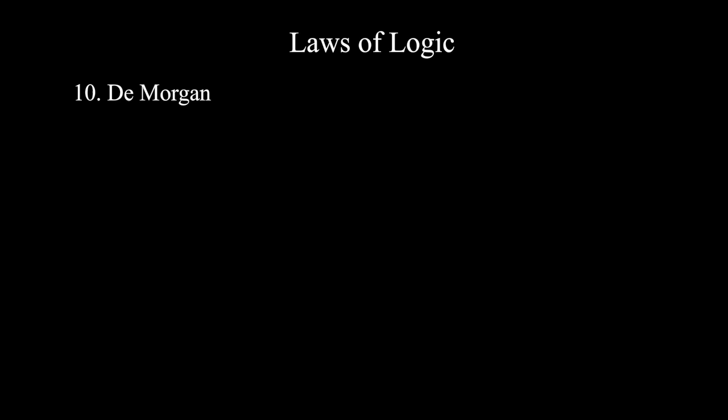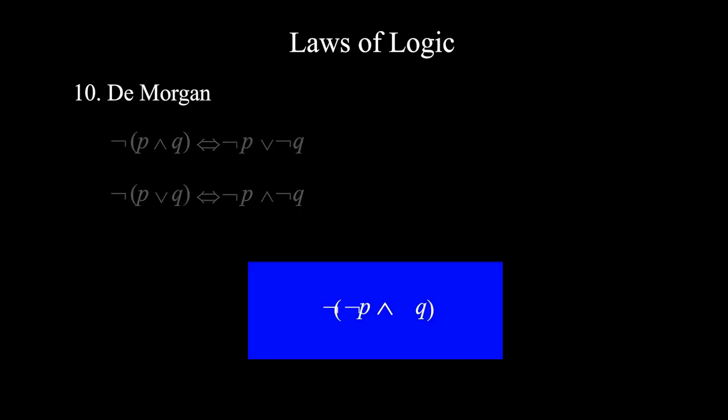Number ten, De Morgan. Not (p and q) is equivalent to not p or not q. Not (p or q) is equivalent to not p and not q. You can distribute the negation NOT but you have to change the operation.